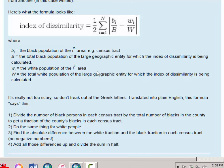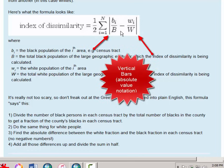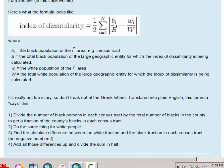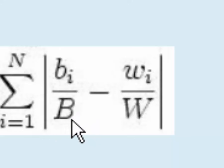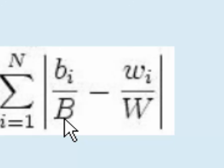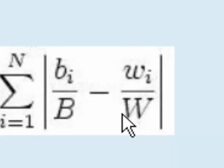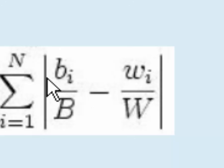Here's how to translate the formula. We begin inside the straight lines: BI stands for each individual census tract and how many black people are in it. The capital B is the total number of black people in all census tracts combined — so it's the individual tract count divided by the total. On the right side, WI is the number of white people in individual census tracts divided by the total number of white people in all census tracts. We take the difference between the two using the subtraction sign and take the absolute value.